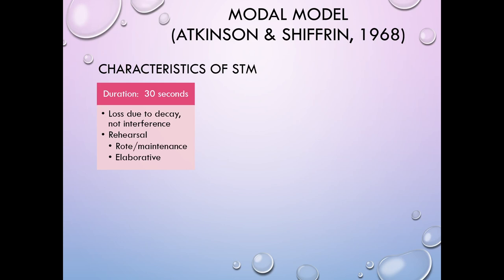You can maintain information in short-term memory through rehearsal. The first type is rote or maintenance rehearsal — going over and over the same material just to make sure it doesn't fade from short-term memory. You're not doing anything else with the information; you're just keeping it there.